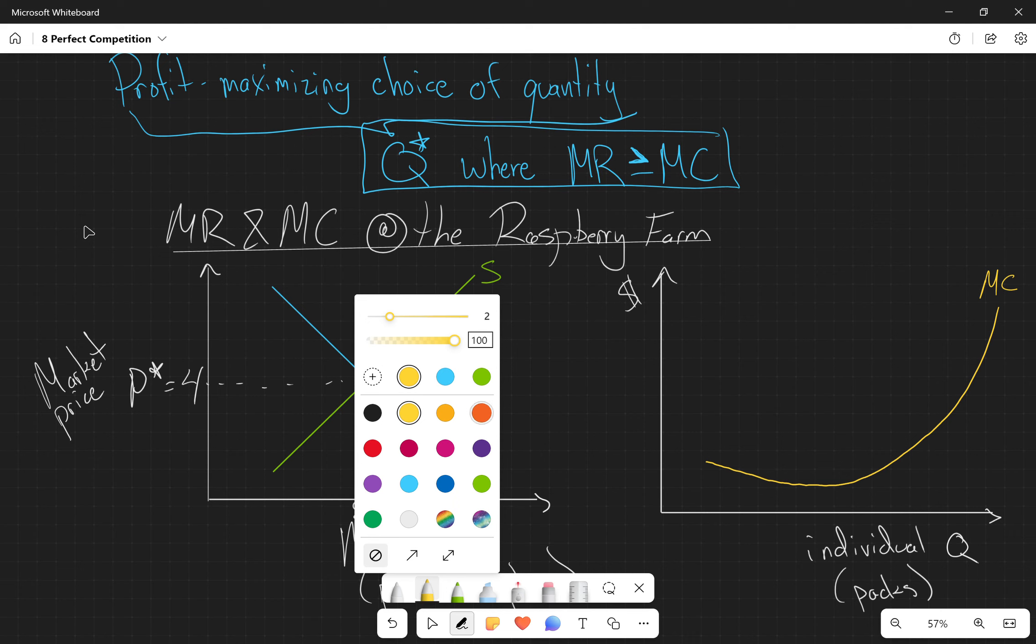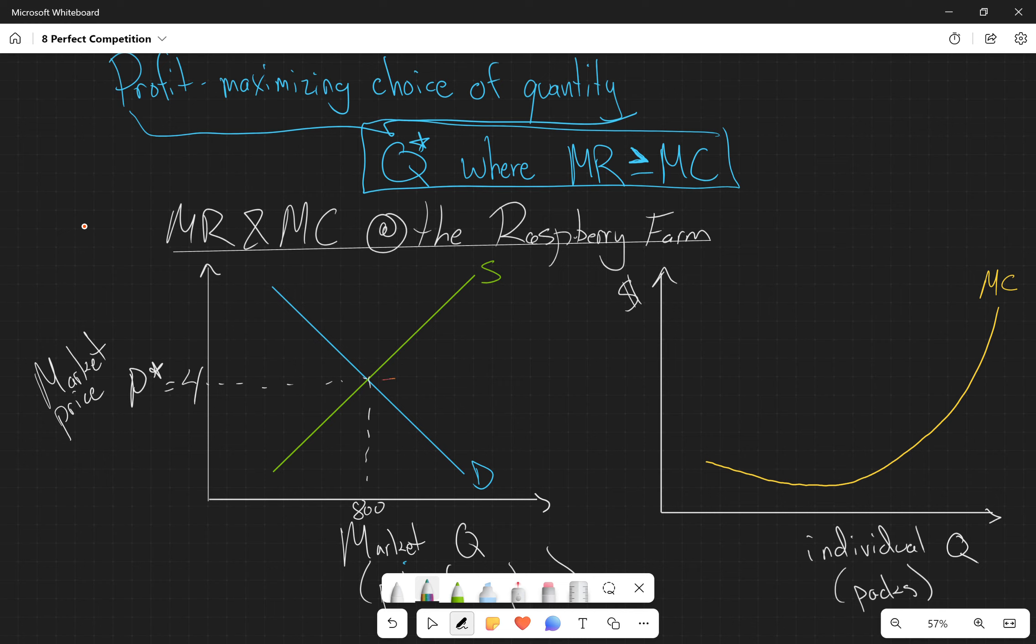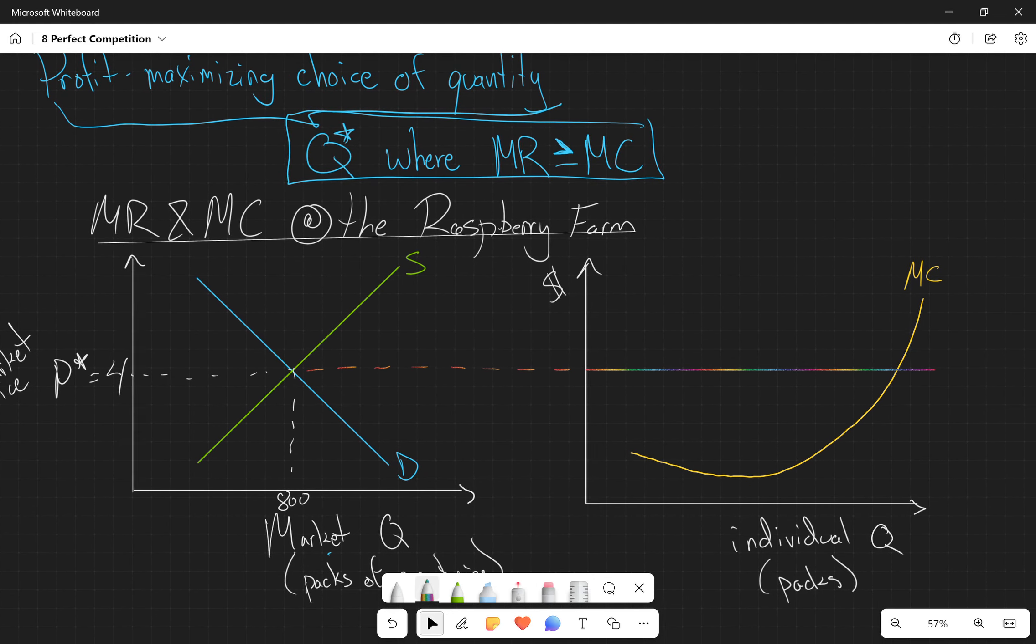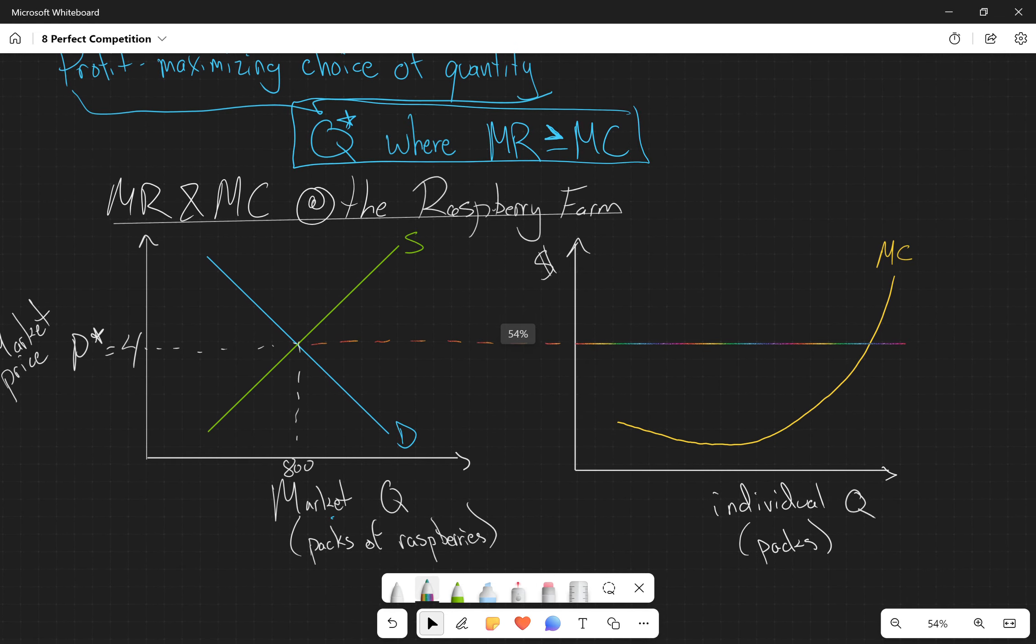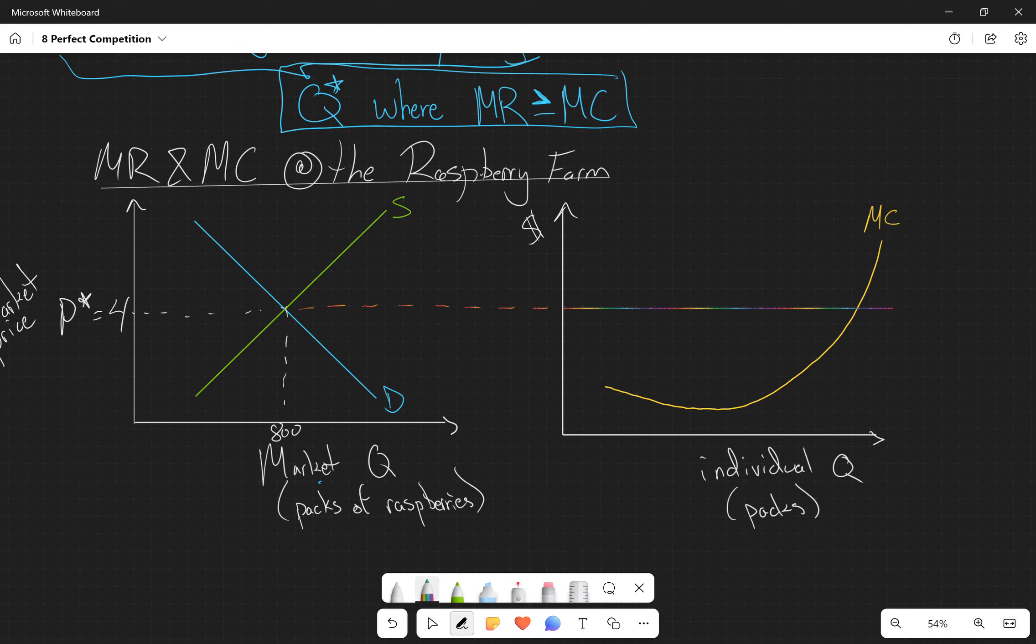The marginal revenue is nothing more than we're taking this price from the market and we're drawing a straight line. That straight line, when we're in a perfectly competitive world, we label with three different labels which is so annoying. This is our demand curve and our marginal revenue curve and the price.